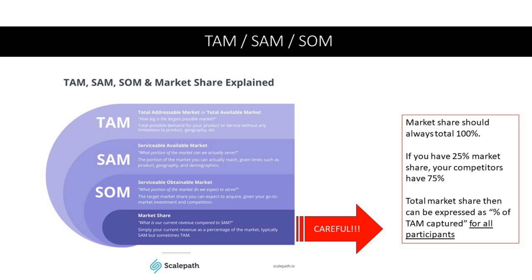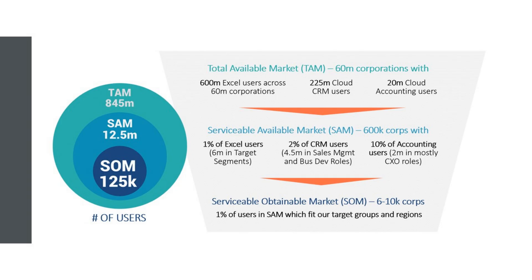You often see firms that just throw up total addressable market but don't take it down to the serviceable obtainable level. There's an important distinction around market share: market share should always total 100%. If you have 25% market share, your competitors have the other 75%. Total market share can be expressed as the percentage of TAM captured for all participants. That's a very important thing to distinguish, and it can oftentimes get confusing when working with these numbers.